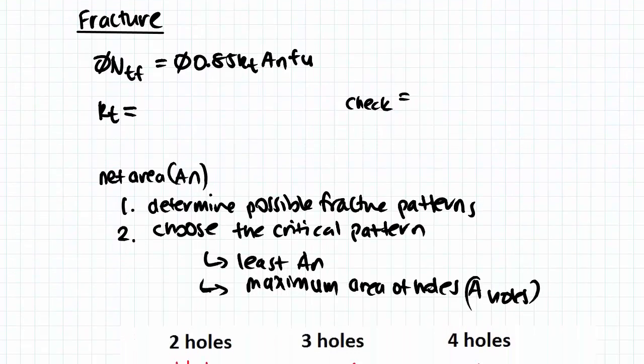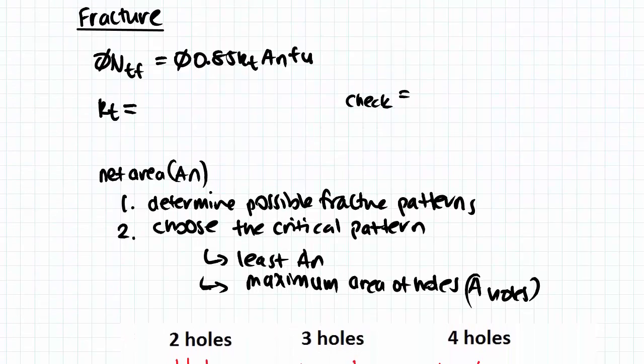In this video we're going to continue on with the fracture section capacity. We know what the fracture section capacity equation is, which is over here. So we start by solving for the first unknown variable, which is kT, our correction factor.